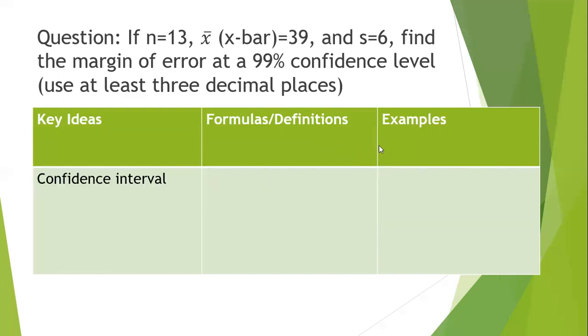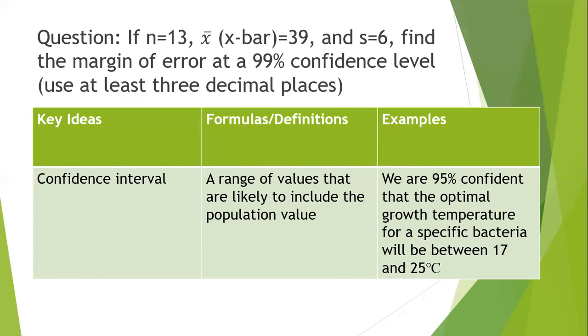So a confidence interval or confidence level gives us a range of values that are likely to include the population value. Just like I said with our bear population, we can calculate the mean and then calculate an interval of perhaps the average weight. We'd say we expect the average weight to be between number one and number two, and we're going to be confident based on the calculations and formulas we use.